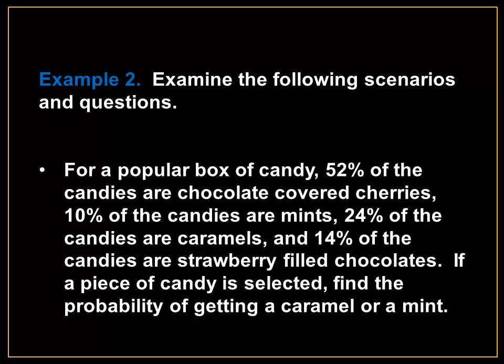For a popular box of candy, 52% of the candies are chocolate covered cherries, 10% of the candies are mints, 24% of the candies are caramels, and 14% of the candies are strawberry filled chocolates. If a piece of candy is selected, find the probability of getting a caramel or a mint.